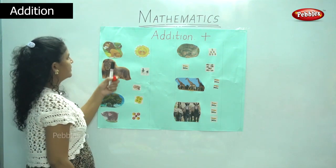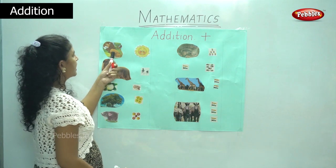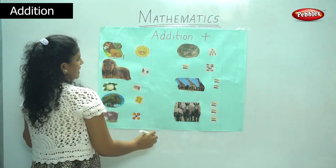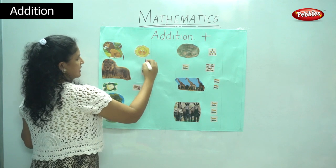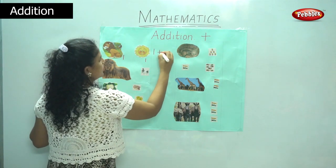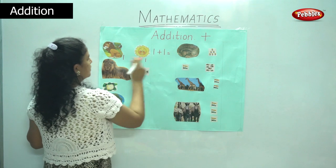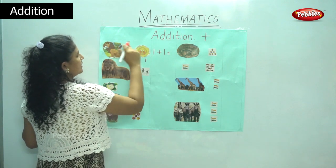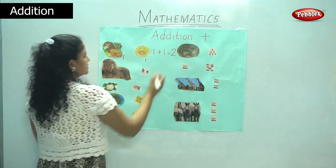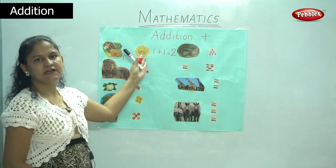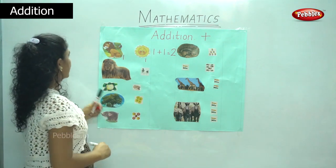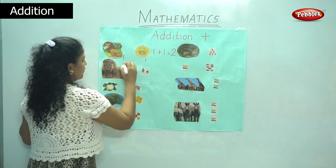So I have a picture of a lion — one lion and one sun. So that gives me one plus one is equal to two. So one plus one is two.